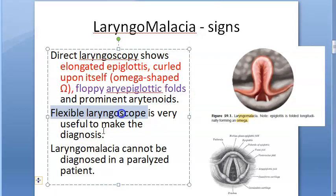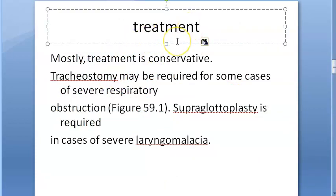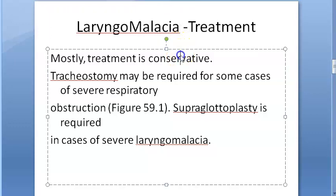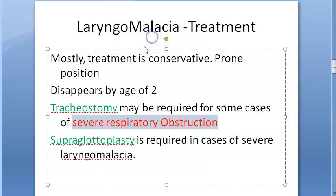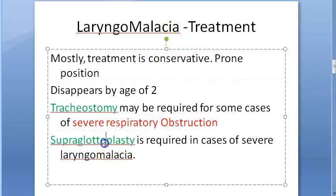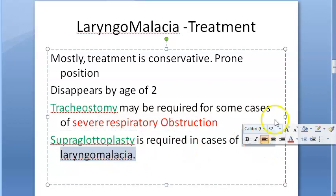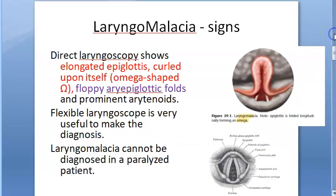A flexible laryngoscope is very useful to make the diagnosis. Note that if the patient is paralyzed, laryngomalacia cannot be diagnosed. Coming to treatment, it is conservative — place the patient in the prone position and the condition disappears by age two. Tracheostomy may be required in some cases if there is severe respiratory obstruction. If there is severe laryngomalacia, supraglottoplasty is performed.